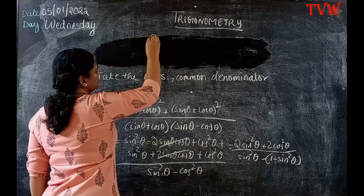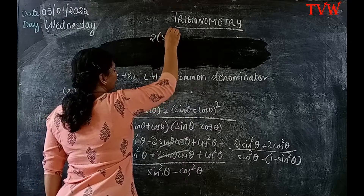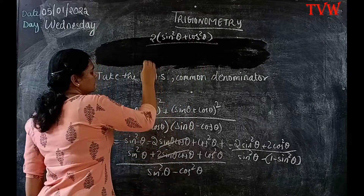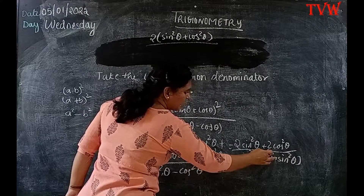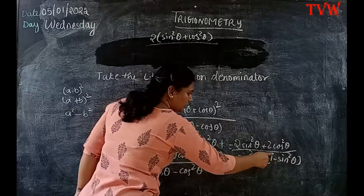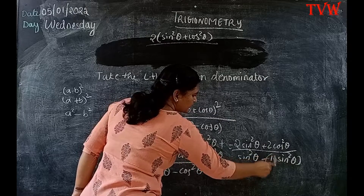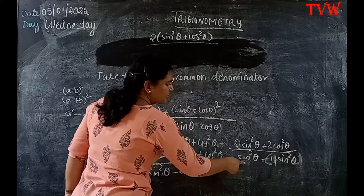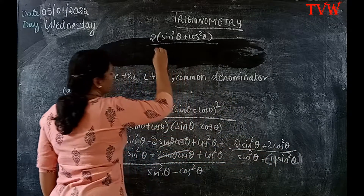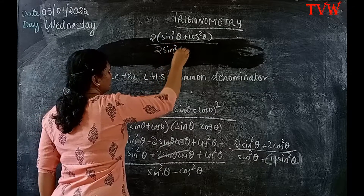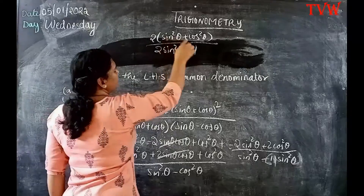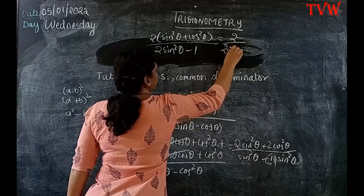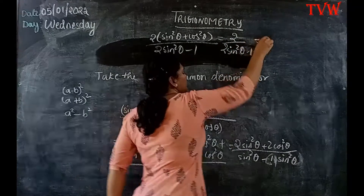In the numerator I can take 2 as a common factor, giving 2(sin²θ + cos²θ). Removing the brackets in the denominator: sin²θ − 1 + sin²θ = 2 sin²θ − 1. Since sin²θ + cos²θ = 1, the numerator becomes 2 × 1 = 2. So we get 2 / (2 sin²θ − 1), which equals the RHS.